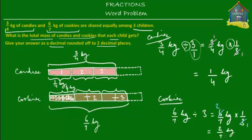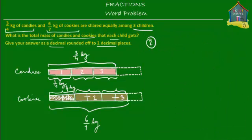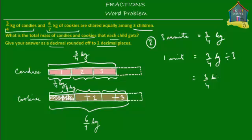So what you have is two-sevenths of a kilogram of cookies for each child and one-fourth of a kilogram of candies for each child. That was Method 1 — the division method. The other method would be the unit method. We know that three units are equal to three-fourths of a kilogram. So one unit would be equal to three-fourths divided by three, which is three-fourths multiplied by one-third. The threes cancel out, giving one-fourth of a kilogram. Since one unit is the share of one child, this one-fourth kilogram is exactly what we got from the first method.